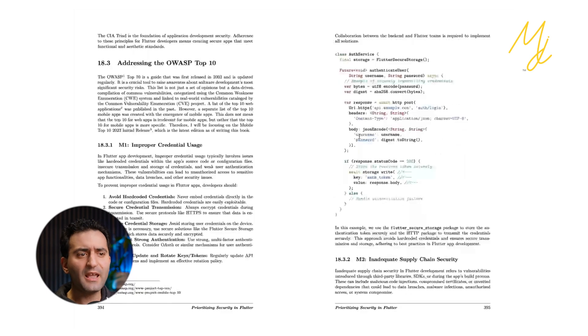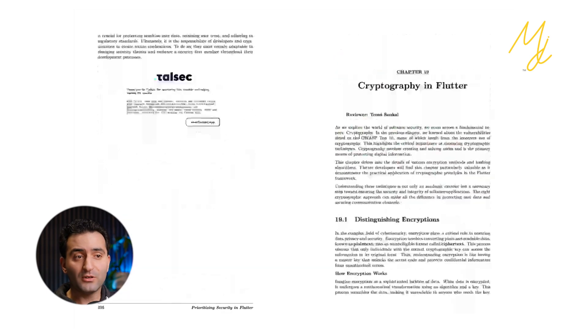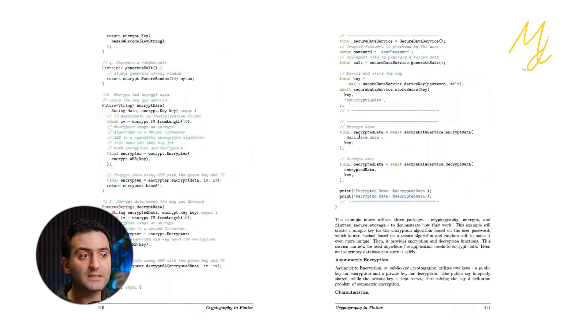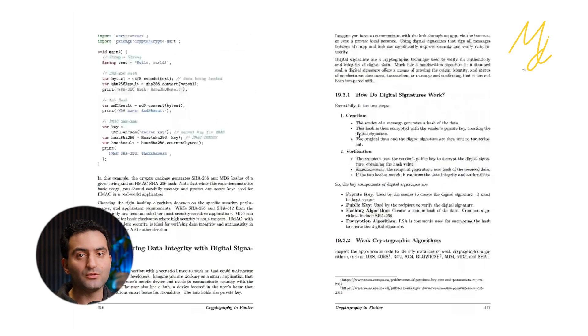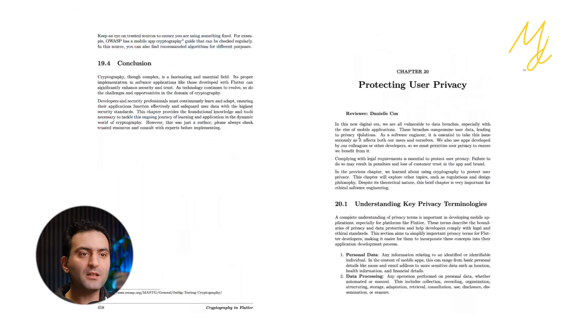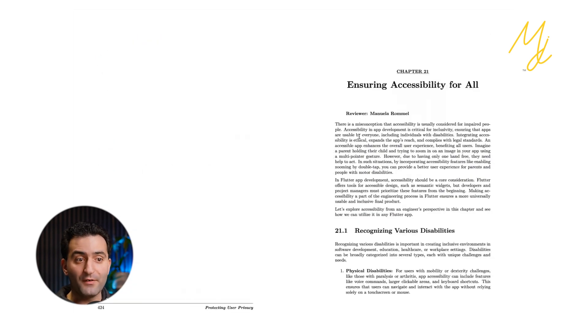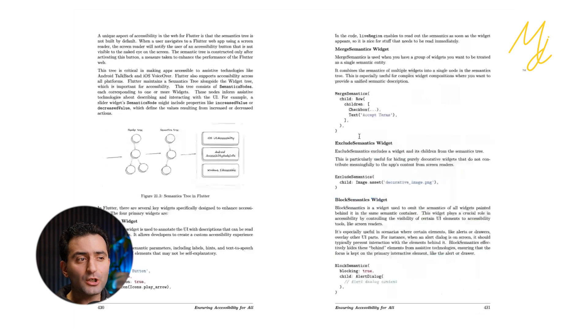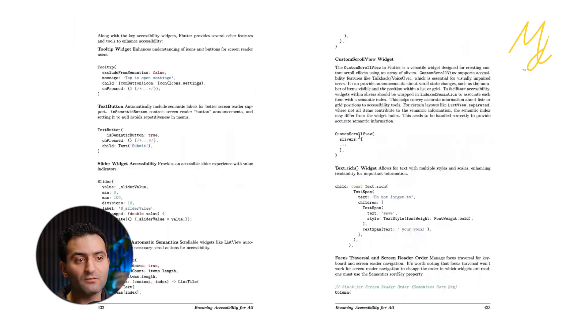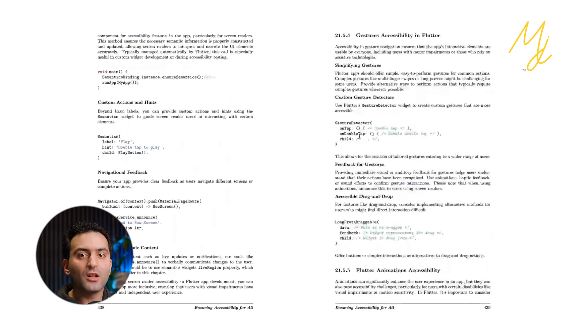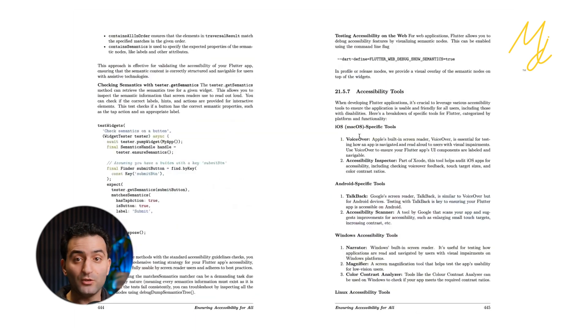Part four is about what I call ethical engineering — covering security, cryptography in Flutter and Dart, how and where to use them, with lots of diagrams explaining the concepts. We also talk about user privacy and accessibility, which is a very important topic. You'll learn about different accessibility features in Flutter as well as general accessibility standards, which Flutter has tried to implement in the framework.